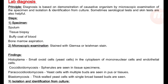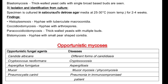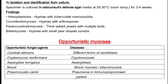Paracoccidioidomycosis: yeast cells with multiple buds are seen in pus or tissues. Blastomycosis: thin-walled yeast cells with a single broad-based bud are seen. Isolation and identification from culture: Sabouraud dextrose agar — findings: histoplasmosis shows hyphae with tuberculate macroconidia; coccidioidomycosis shows hyphae with arthrospores; paracoccidioidomycosis shows thin-walled yeast with multiple buds; blastomycosis shows hyphae with small pear-shaped conidia.